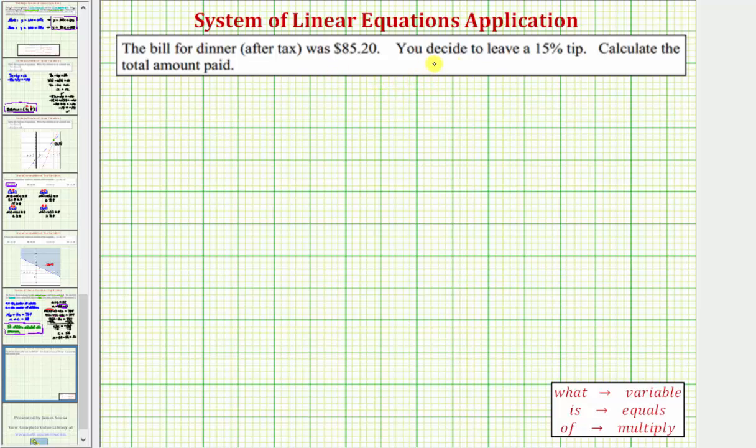For the first method, we'll determine the tip amount and then add it to the bill to determine the total amount paid. So to begin by determining the tip amount, we want to answer the question,